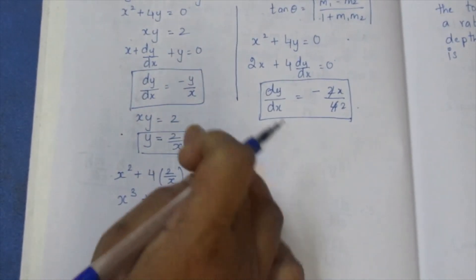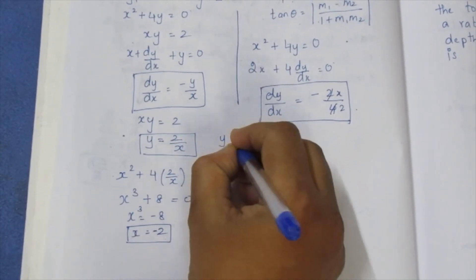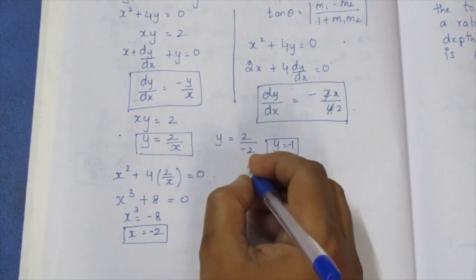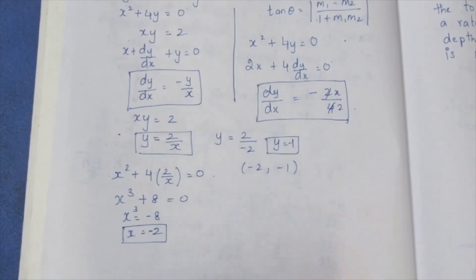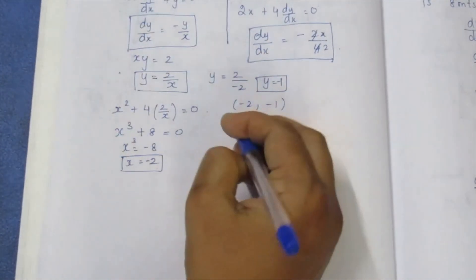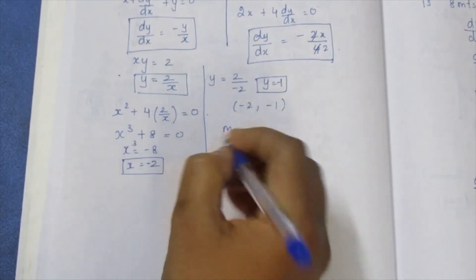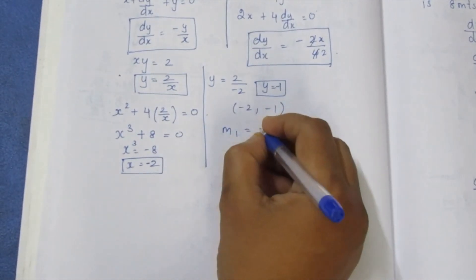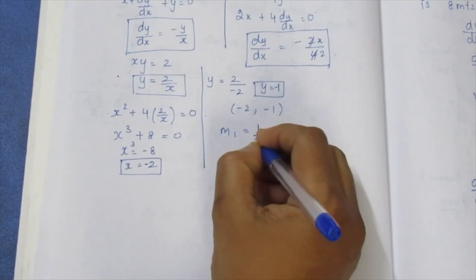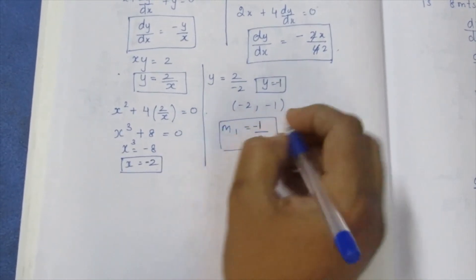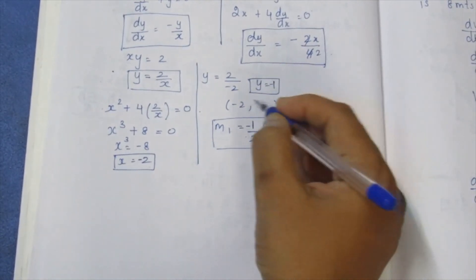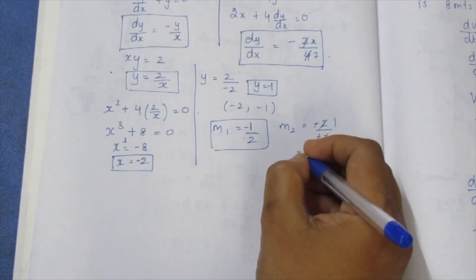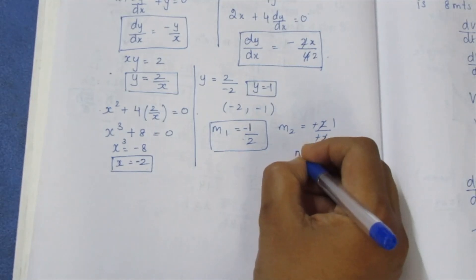Since cube root of 8 is 2 (as 2×2×2 = 8), x = -2. Then y = 2/x = 2/(-2) = -1. So the intersection point is (-2, -1). At this point, m1 = -y/x = -(-1)/(-2) = -1/2, and m2 = x/2 = -2/2 = -1... wait, m2 = 1.